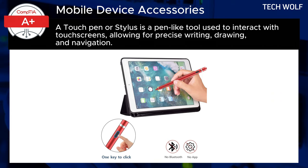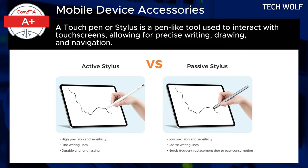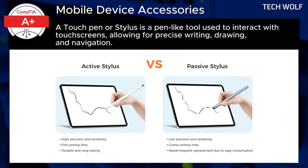They come in two main types: passive and active. Passive styluses work without batteries, functioning like a finger by conducting electrical charge, making them ideal for basic tasks such as navigation. Active styluses, on the other hand, require batteries to support advanced features like pressure sensitivity and electronic erasing, ideal for digital art and handwriting applications.